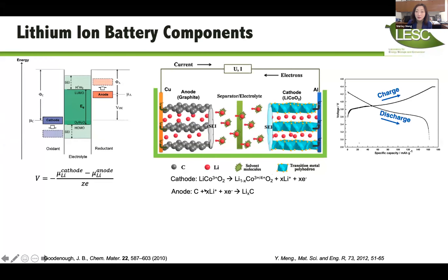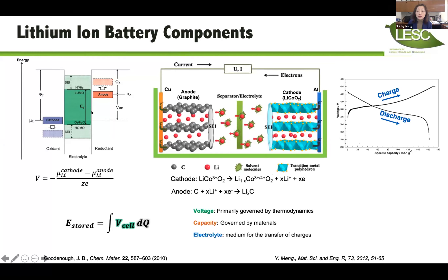Everyone knows this energy band diagram — a schematic of how intercalation chemistry works and a typical voltage curve for an intercalation compound. In lithium-ion batteries using graphite, lithium nickel manganese oxide, or lithium cobalt oxide, both electrodes are stable within the HOMO-LUMO levels of the electrolyte when you first assemble the battery. When we start to sweep the voltage, the SEI gets formed.